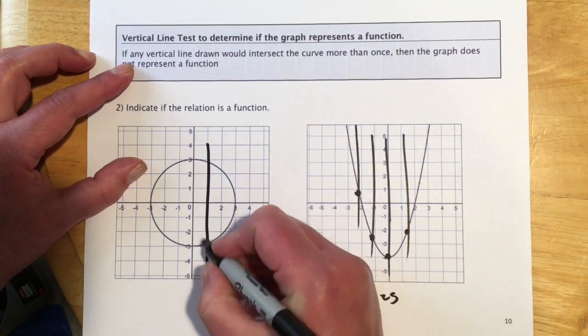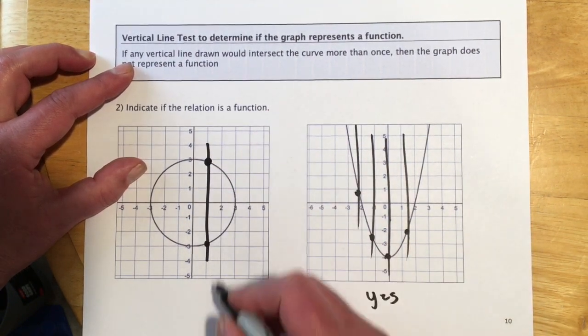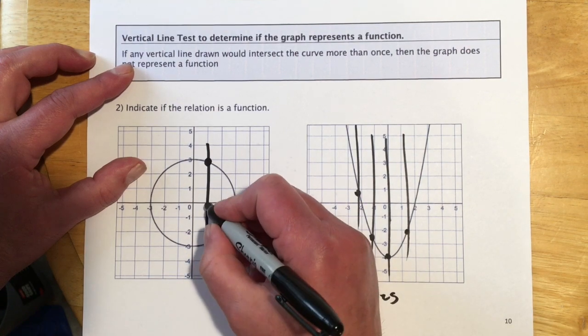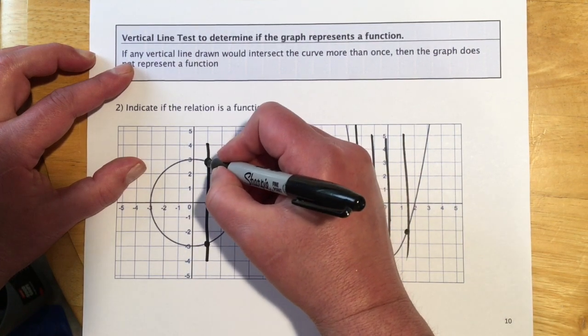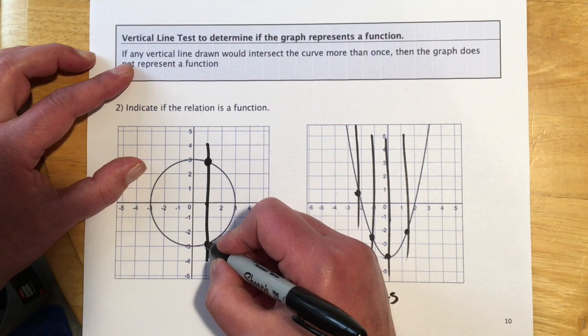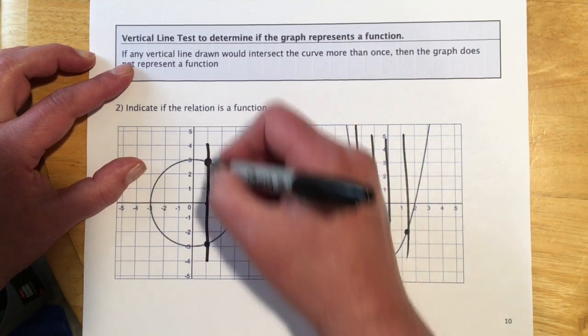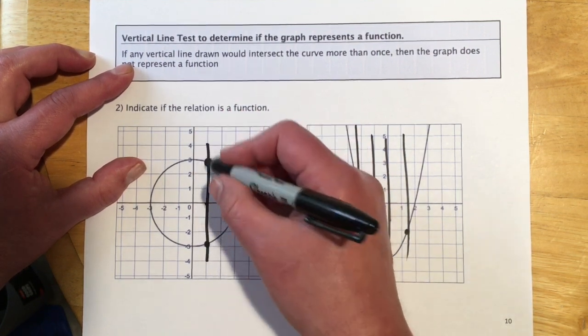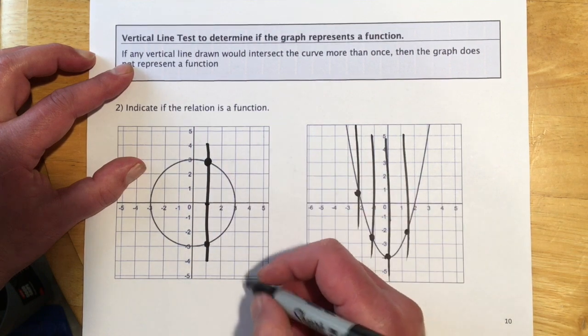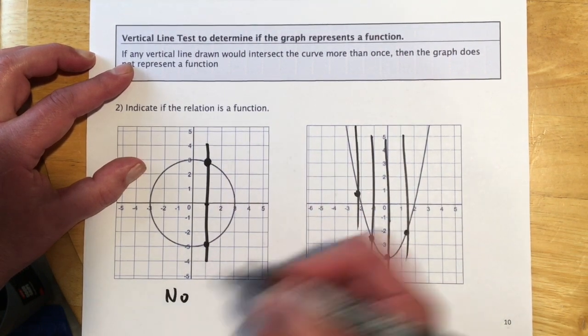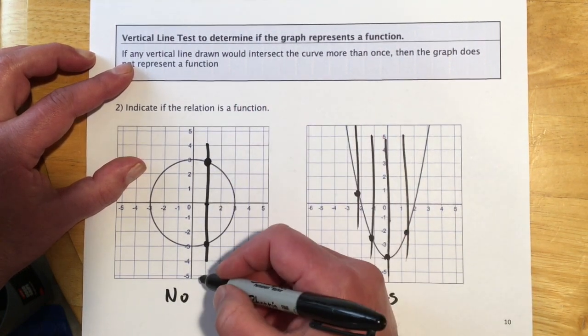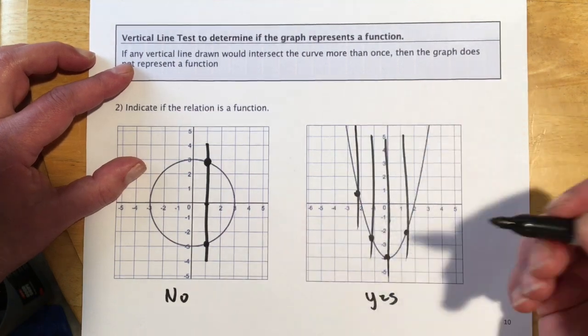Here, if I draw a vertical line, I hit the graph twice. So for this given x, when x is 1, there's a value up here just below 3, and there's one down here just above negative 3, that are both two different y values for that given x. So this would be no, not a function. If it intersects more than once, it's not a function. If it only hits once, then it is a function.